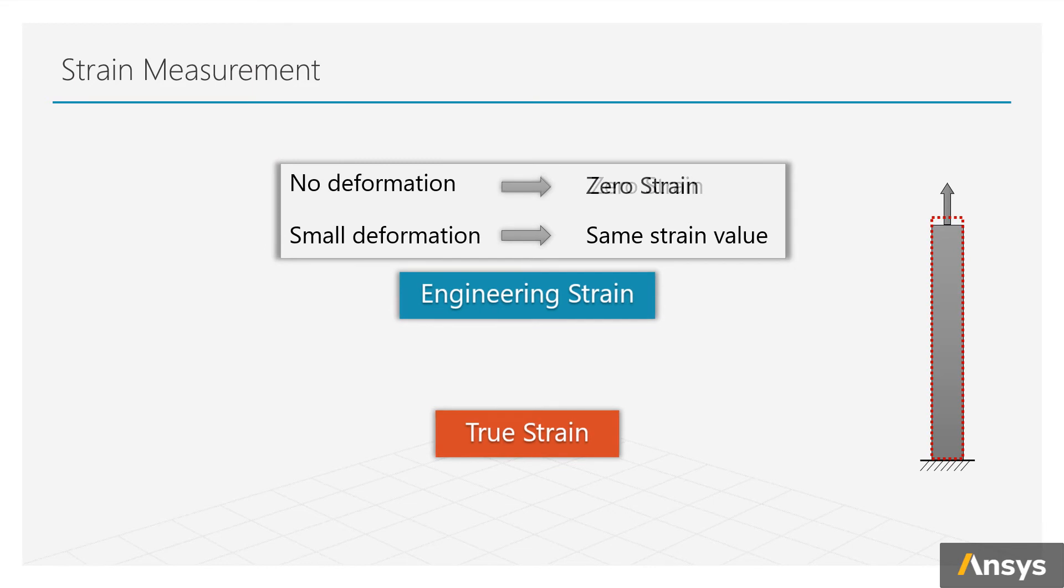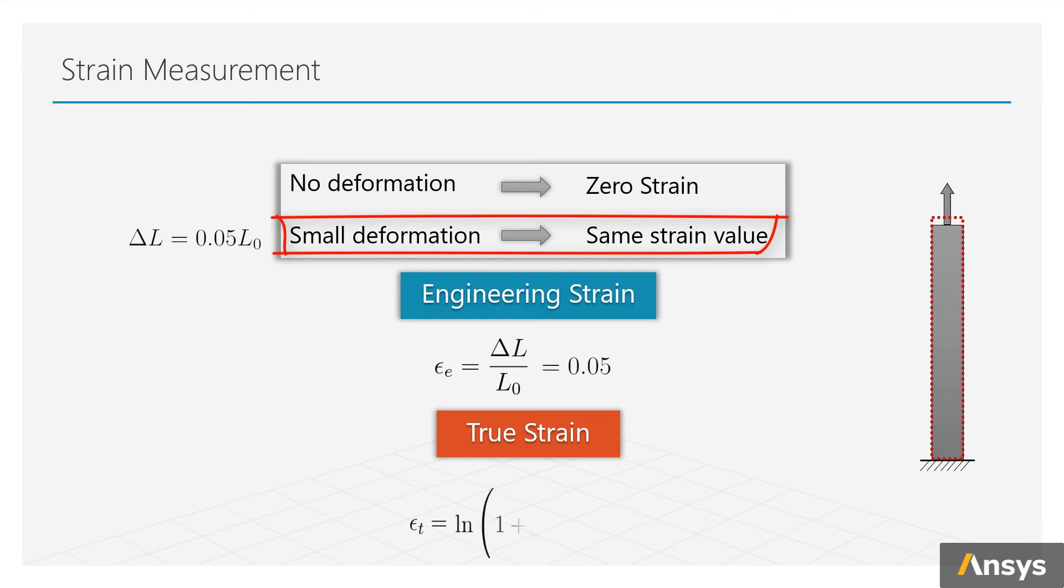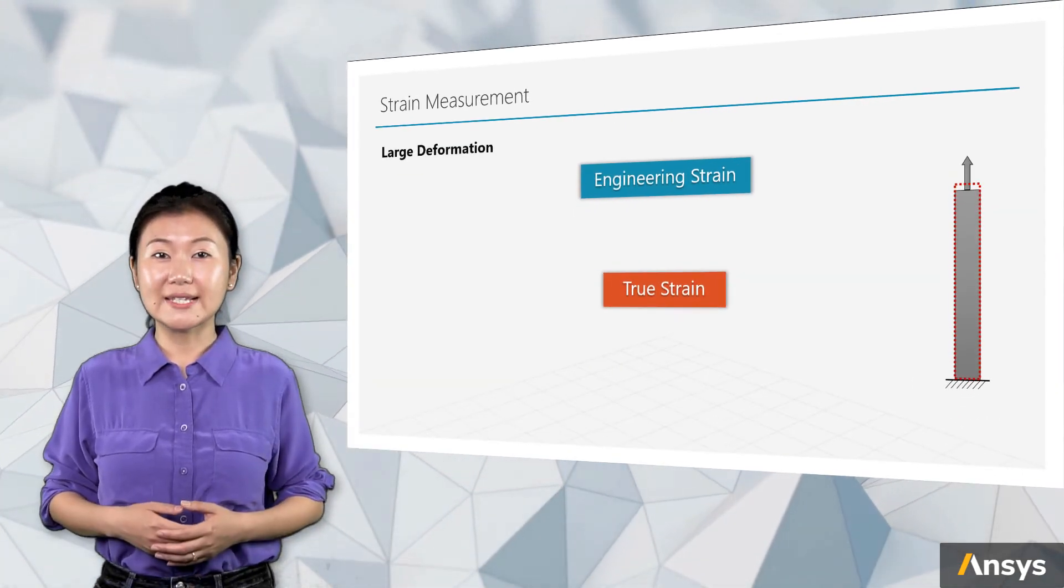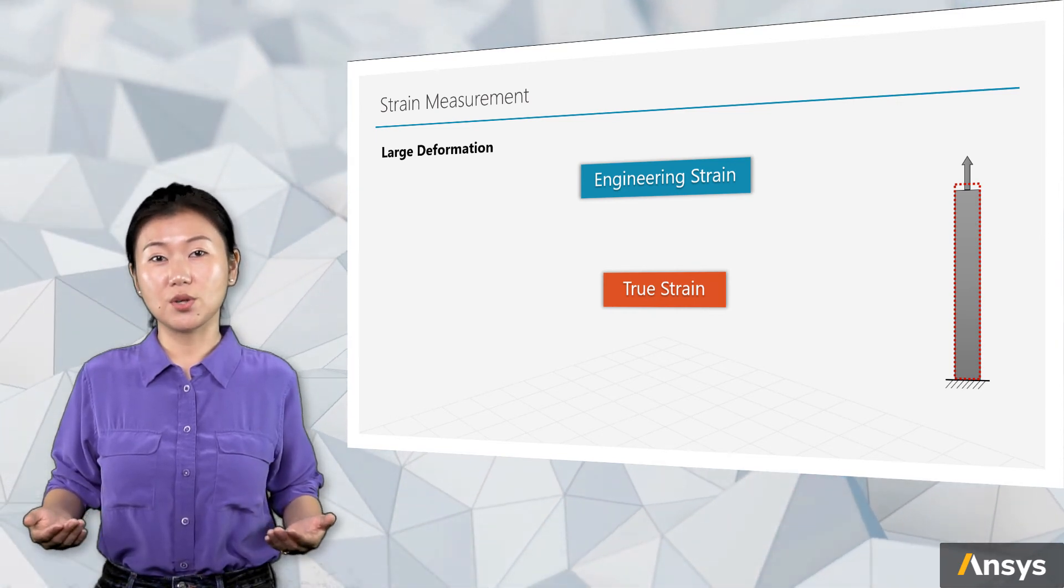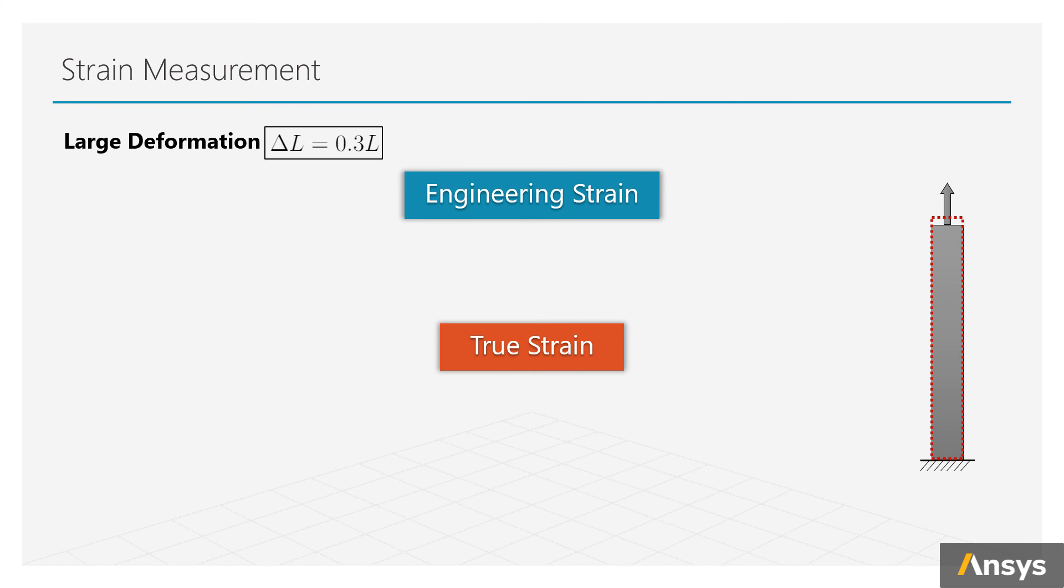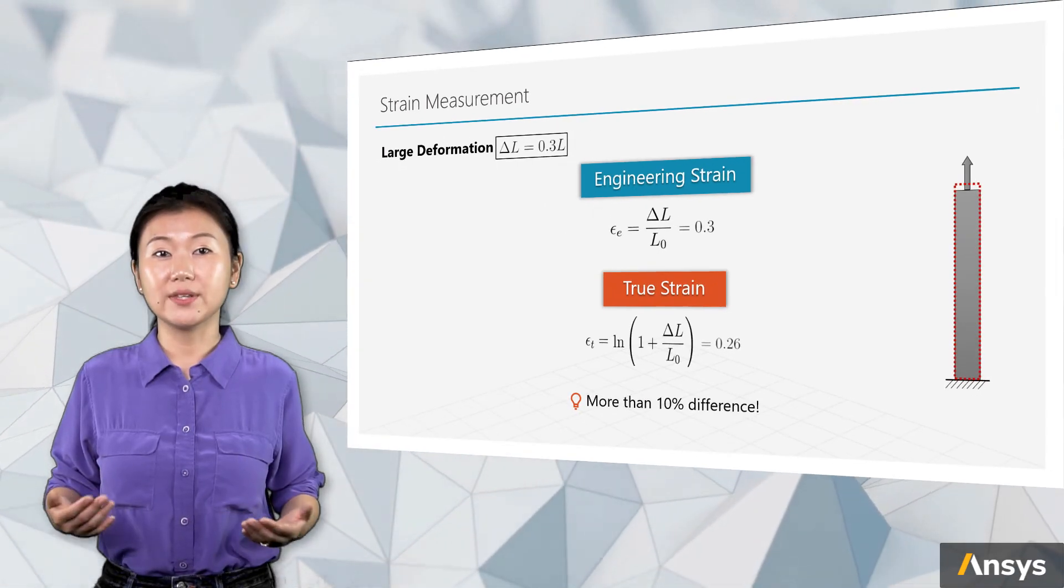When there is small deformation, say change of length is one twentieth of the original length, the engineering strain is 0.05 and the true strain is calculated to be 0.049. When the deformation becomes large, the difference between the two strains will show up. If the change of length is 30% of the original length, the engineering strain is 0.3, but the true strain is calculated to be 0.26. The difference between them is more than 10%.